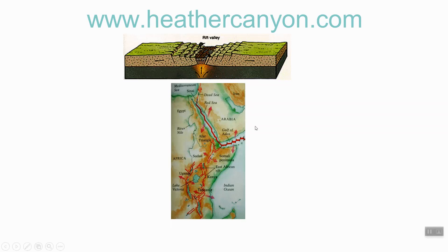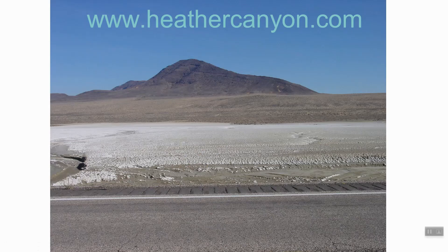This is happening today in Africa — the East African Rift Zone. In Africa we've got long mountain ranges, and in between them there are several very deep lakes. But in Nevada, because it's so much more arid, we don't get lakes. Instead we get playas.